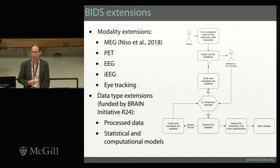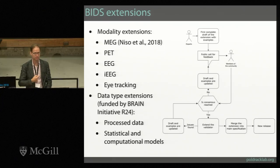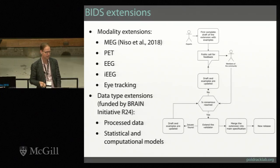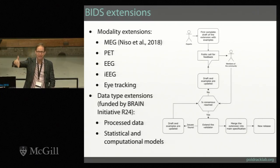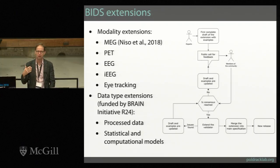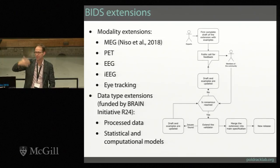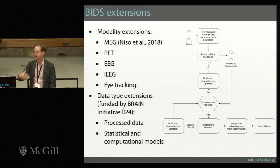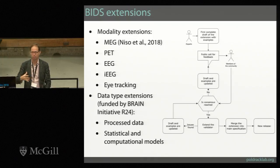Right now there's a published extension for MEG, and ongoing extensions for PET, EEG, intracranial EEG, and eye tracking. In the context of other data types, with funding from the BRAIN Initiative, we've been developing extensions around both processed data — the results of taking raw data and actually doing something with them — and for the statistical and computational models needed to actually process the data and represent processed data.